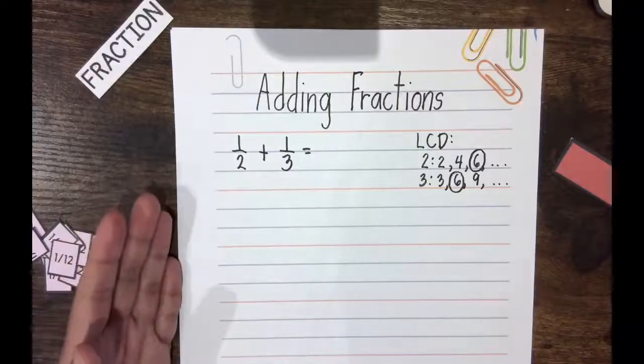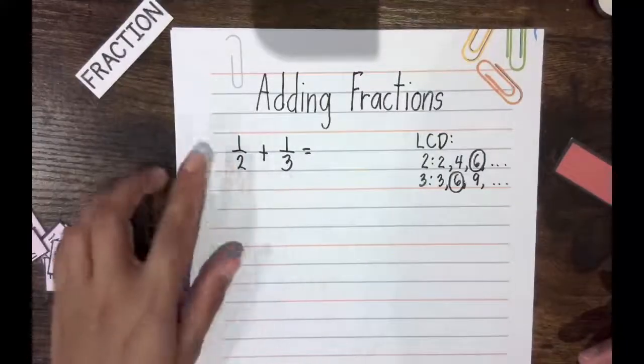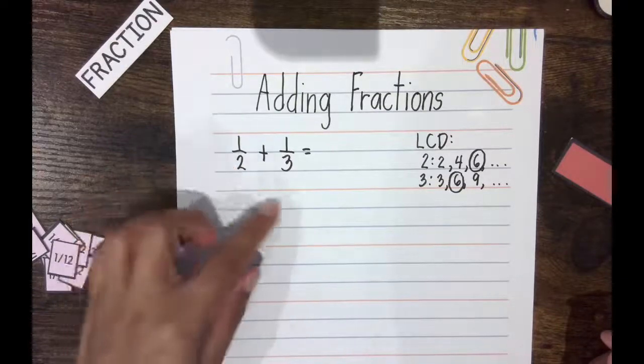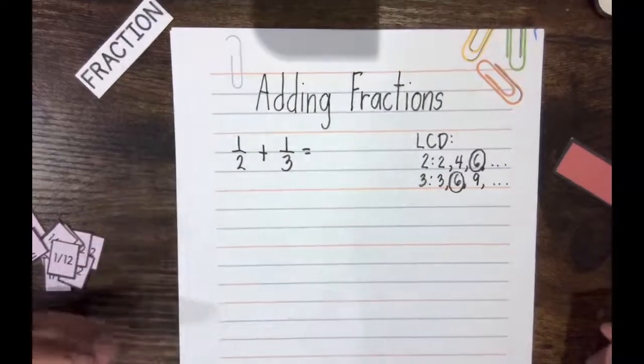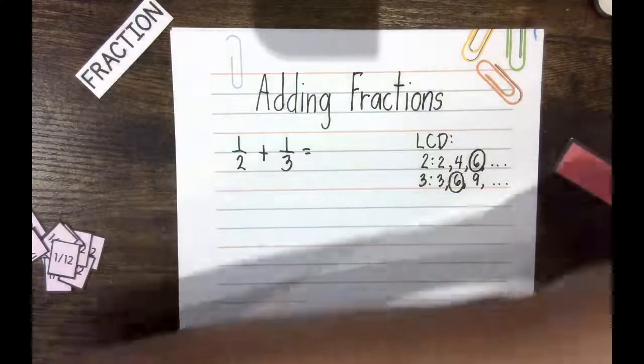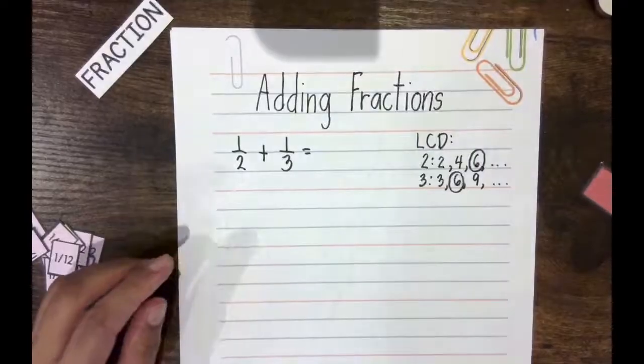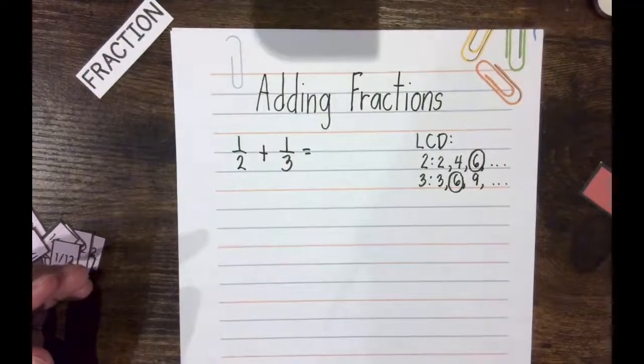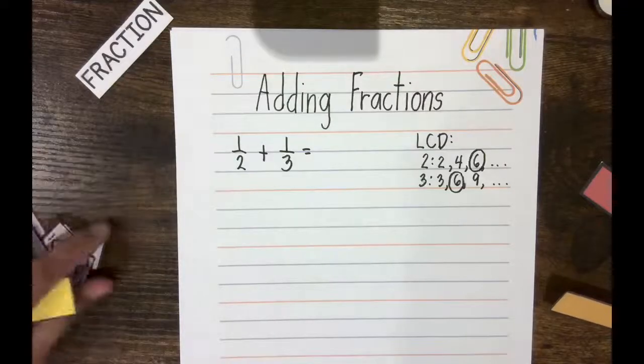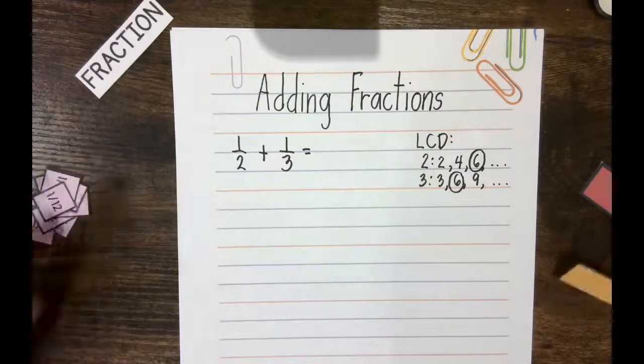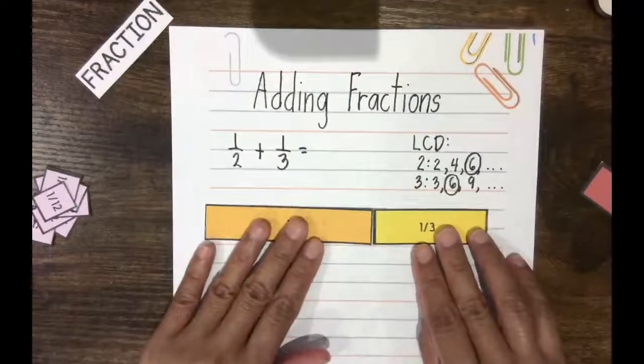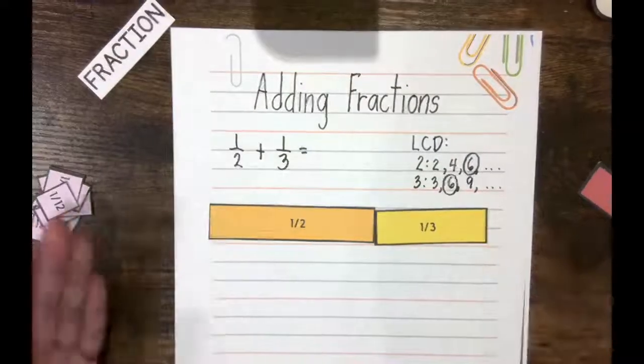So that means you can express 1/2 as a fraction with a denominator of 6 and add that to a fraction that's equivalent to 1/3 but with a denominator of 6. What does that actually mean? What does that look like? Why do I have to do that? Like I said earlier, it's easier to add fractions when they have the same denominators.